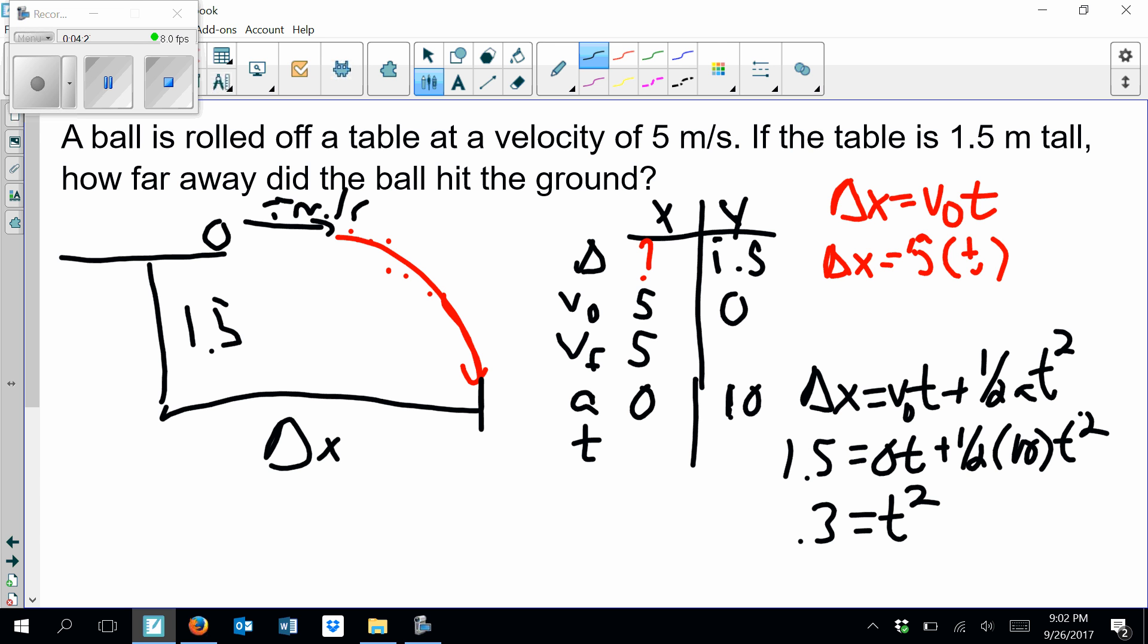Let me get my calculator out. Give me one second. Should have been prepared for that. So we've got 0.3, and then we're going to take... Oh, I need to get a scientific calculator. There we go. So if I do 0.3 and take the square root of it, I end up with a value of 0.55 if I round it. So my time is 0.55 seconds.